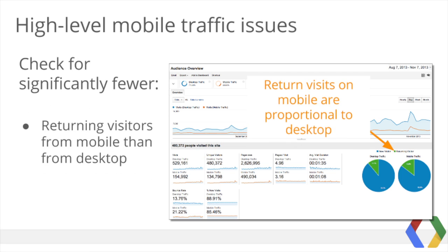My visitors come from countries where the mobile traffic ranges from about one-fifth to one-third of the desktop traffic, so 22% is about right. Still in audience overview, we can check if our site is receiving significantly fewer return visits from mobile users than desktop, since that would also signal a high-level issue. The two pie charts show the breakdown of new visitors versus returning visitors from mobile and desktop. Our site looks relatively OK, because the mobile distribution of new versus returning is about the same as the desktop distribution. If we had only 5% of our mobile visitors returning to the site while desktop had double that percentage, that could have signaled a problem.